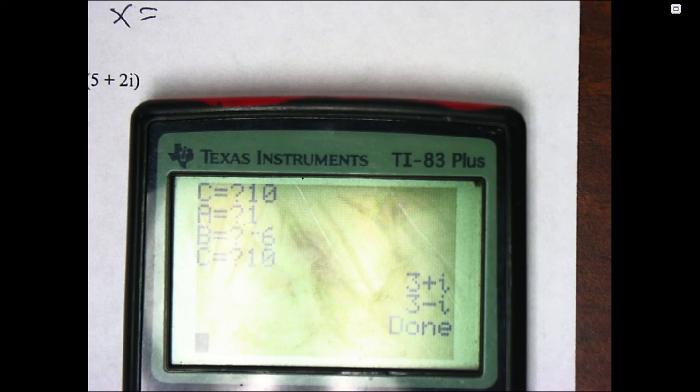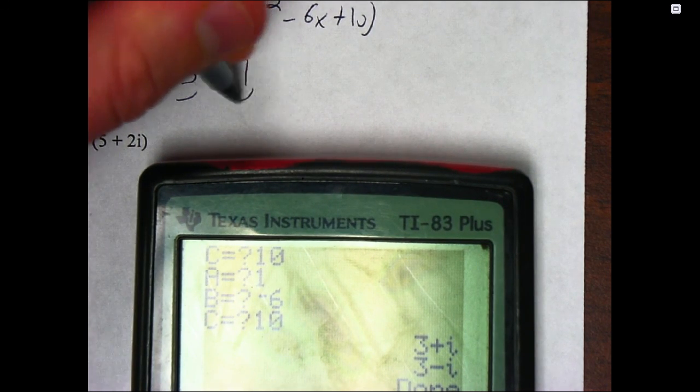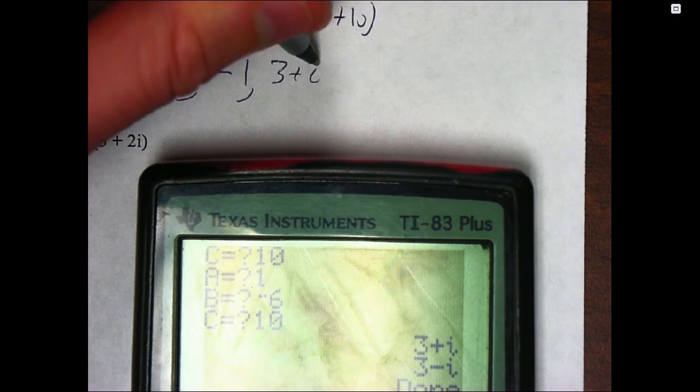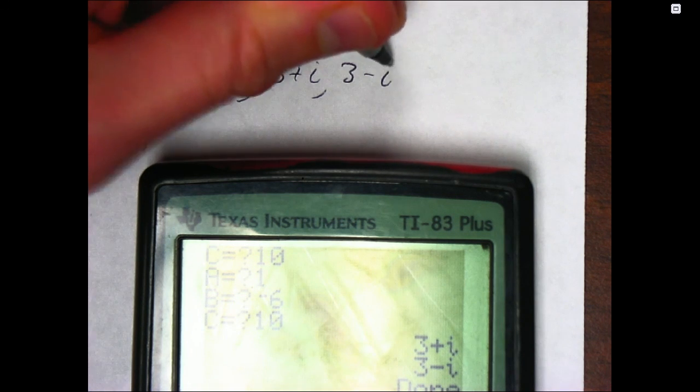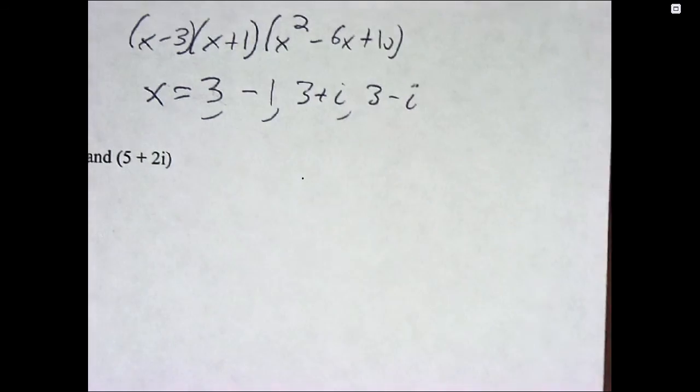And so the quadratic has two non-real answers. And so I now have my list of four answers, which is what I was expecting since it was a fourth degree polynomial. So 3 is one of them, negative 1 is the other, and then 3 plus I is one, and 3 minus I is the other. So I have my four solutions, right? Alright, next one we're going to...